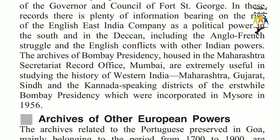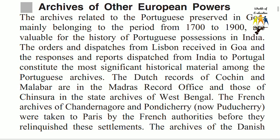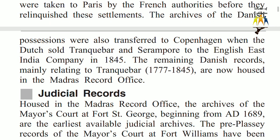Archives of Other European Powers. The archives related to the Portuguese, preserved in Goa, mainly belonging to the period from 1700 to 1900, are valuable for the history of Portuguese possessions in India. The orders and dispatches from Lisbon received in Goa and the responses and reports dispatched from India to Portugal constitute the most significant historical material among the Portuguese archives. The Dutch records of Kochi and Malabar are in the Madras Record Office, and those of Chinchira in the State Archives of West Bengal. The French archives of Chandannagar and Pondicherry (now Puducherry) were taken to Paris by the French authorities before they relinquished these settlements. The archives of the Danish possessions were also transferred to Copenhagen when the Dutch sold Tranquebar and Serampore to the English East India Company in 1845.